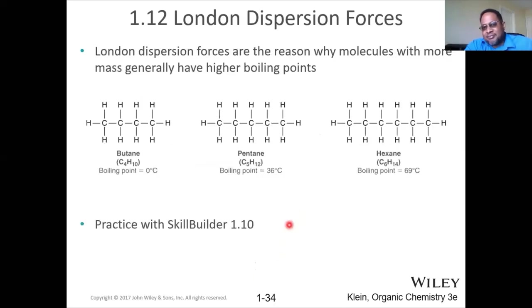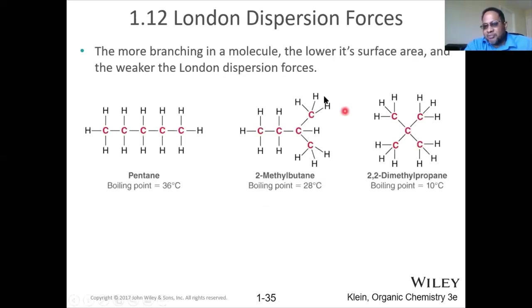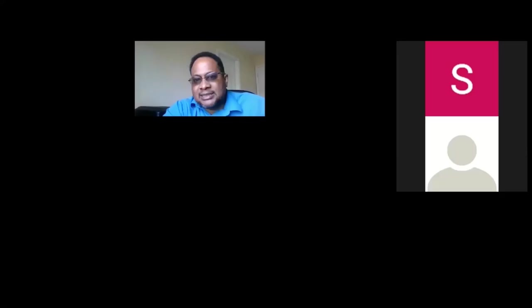Next up on dispersion forces is as you increase the carbon chain length, you increase the surface area. If you increase the surface area, it means that you increase the connectivity of the dispersion forces so that increases the boiling point. However, if you start to branch as shown to the right, then that decreases the surface area and that decreases your boiling point. So that is your summary crash course of chapter one.